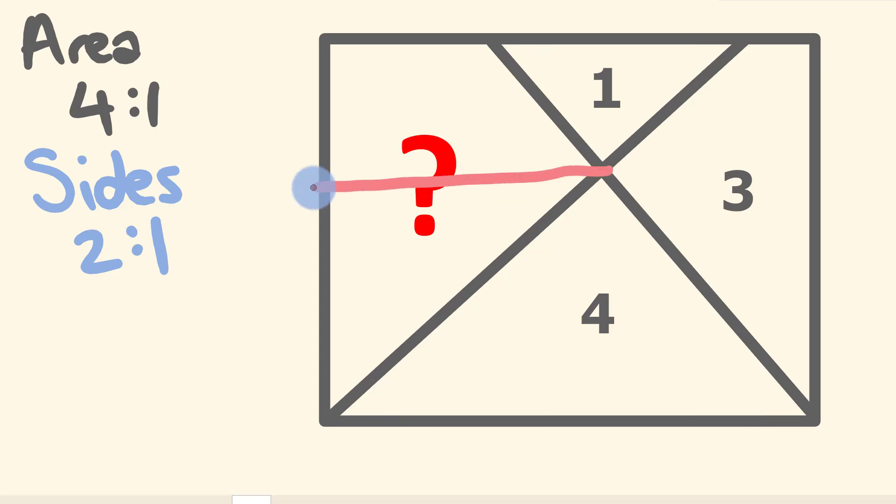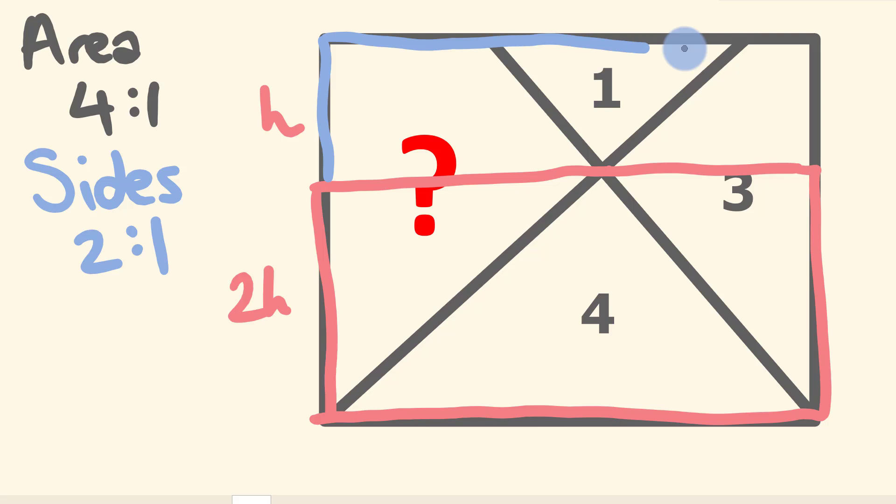If we call the height of this triangle here H, it makes the height of the bigger triangle 2H. And so I can actually break this up now into 2 rectangles. We have a rectangle here, and we also have a smaller rectangle up the top here.